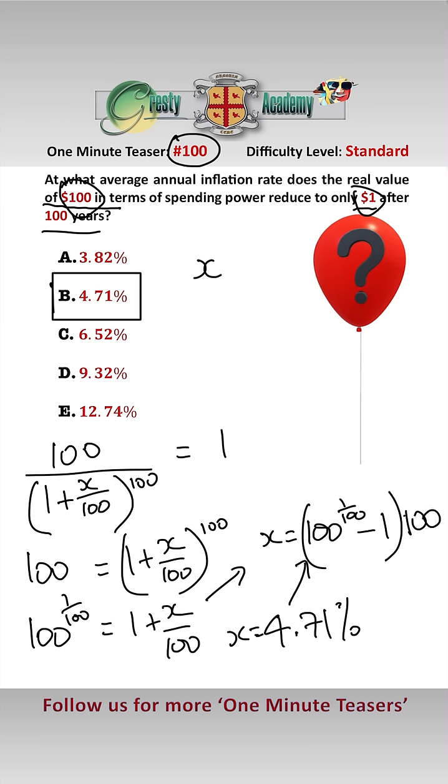Bizarrely and coincidentally, this is almost exactly the same average annual inflation rate in Great Britain over the past 100 years.